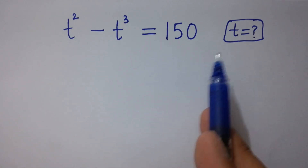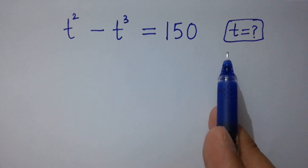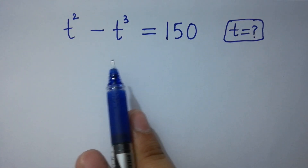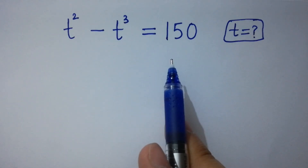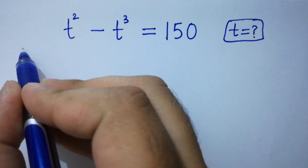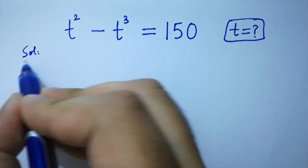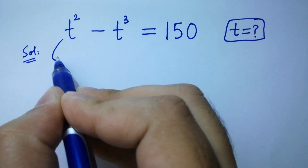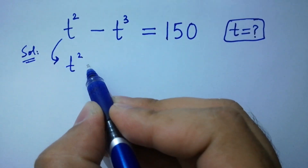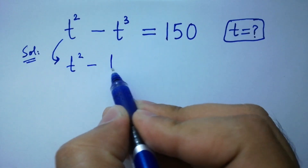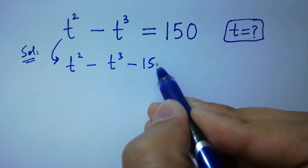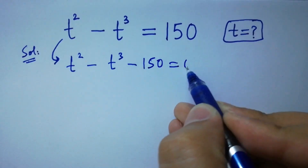Hello friends. Find the value of t if t squared minus t cubed equals 150. Let's have a solution. It can be written as t squared minus t cubed minus 150 equals 0.